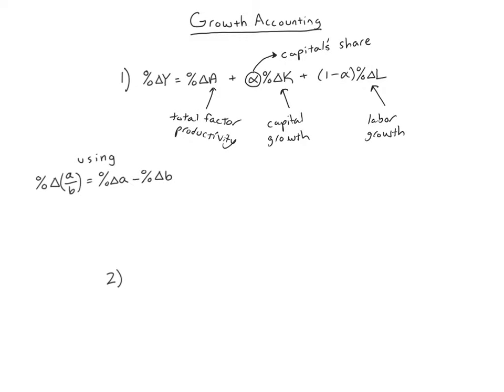So we have these three factors now that we interpreted. We have A, K, and L as our three key contributors to GDP growth. We understand alpha. It's a measure of how important capital is. In particular, it's the fraction of total income that goes to capital owners.